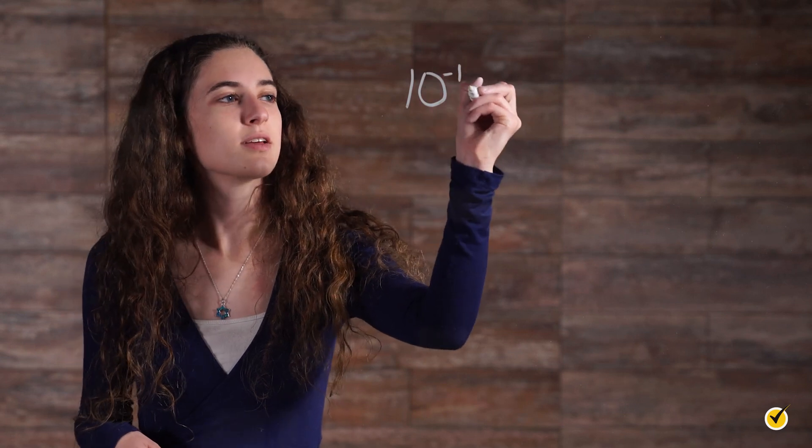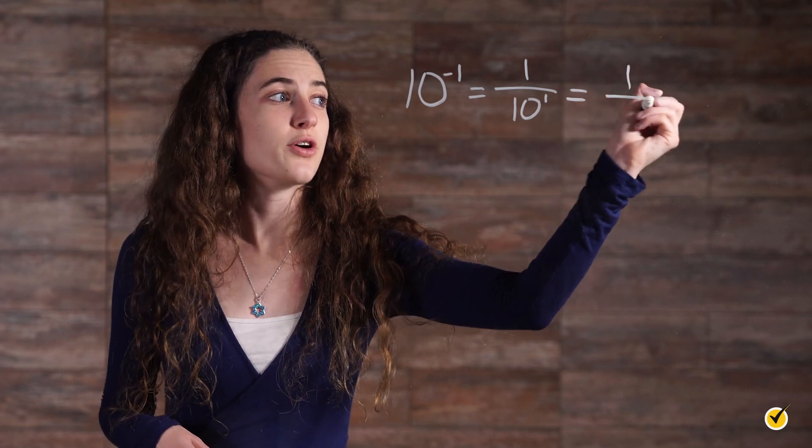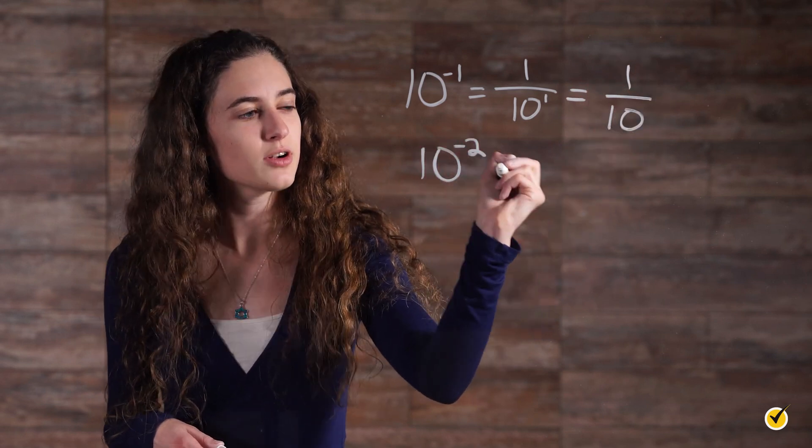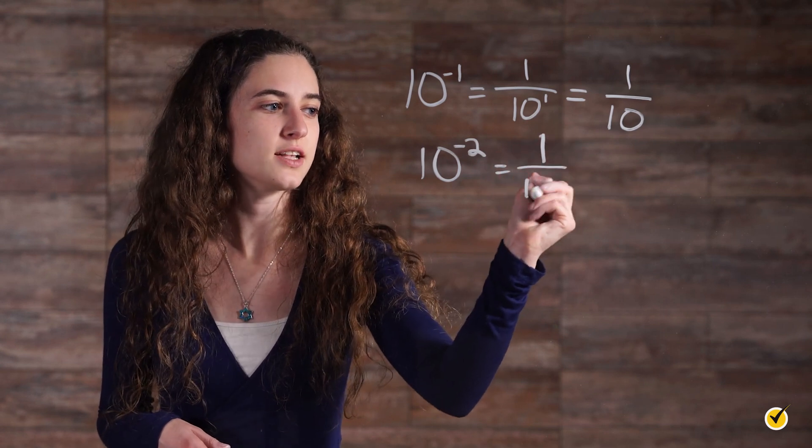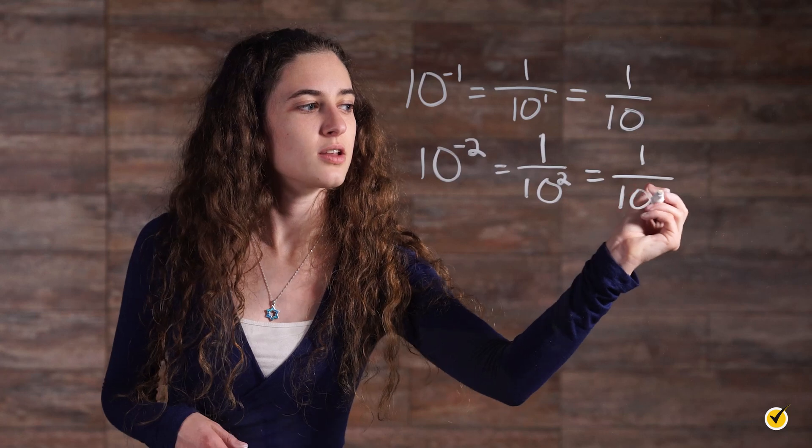First, let's recall how negative exponents work. For example, 10 to the negative 1 is equal to 1 over 10 to the first power, which is equal to 1 over 10. And 10 to the negative 2 power is equal to 1 over 10 squared, which is equal to 1 over 100. Where positive exponents represent multiplication, negative exponents represent division.